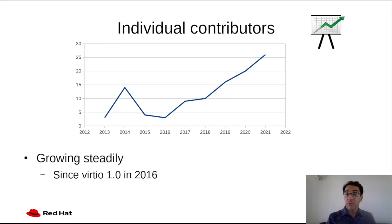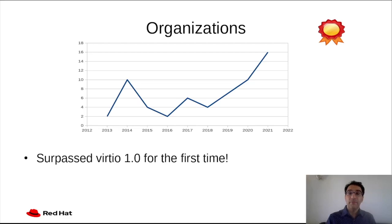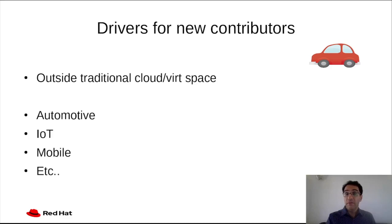More than that, looking at the number of organizations involved in the Virtio specification development, we can see that this year is a record year. We have exceeded the number of organizations working on the Virtio specification that had been the previous record set in 2014. What drives these new contributors? It turns out that for many of them, the reason is outside the cloud space, which is traditional for Virtio.